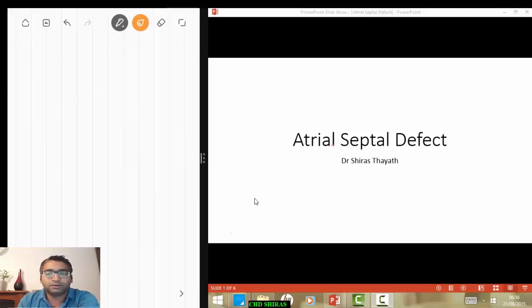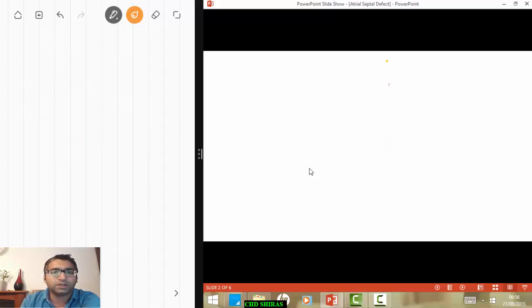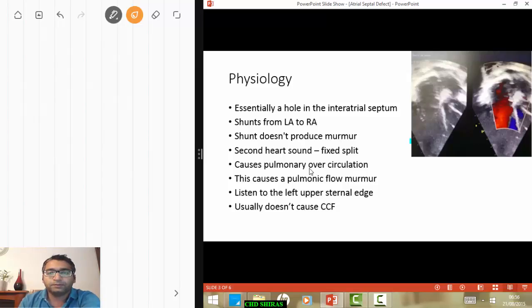Good morning, this is the tutorial on atrial septal defect. My name is Shiraz, so let's look at atrial septal defect in a bit more detail. Essentially, it's a hole between the left atria and the right atria. Between the left and right atria, you have your interatrial septum that you can see over here.